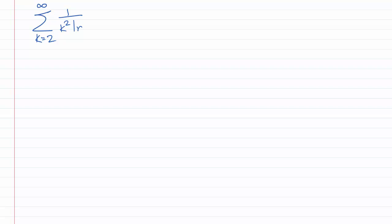Let's try another example: the sum k goes from 2 to infinity of 1 over k squared times natural log of k. This one's a little trickier. It kind of looks like 1 over k squared, because from growth rates, ln of k doesn't contribute as much as k to a power. So I want to think about what that ln of k actually does. I'm multiplying it by k squared, and I want to compare maybe with 1 over k squared. So the question is: is ln of k bigger than or equal to 1?